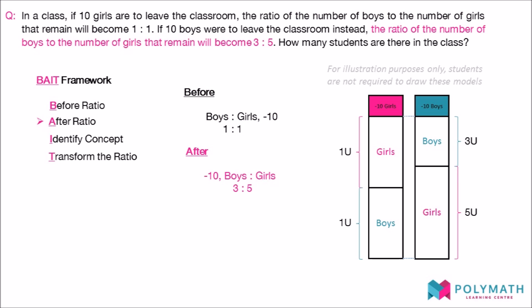We then proceed to write down the after ratio. The after ratio in this question refers to the other relationship which is expressed as 3 to 5 after 10 boys have left the classroom.